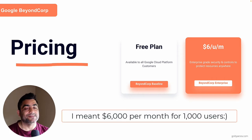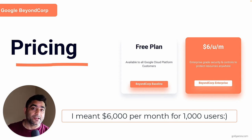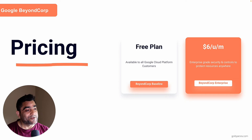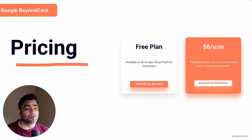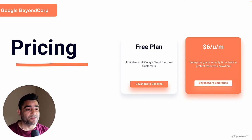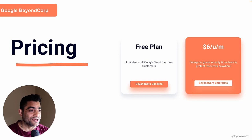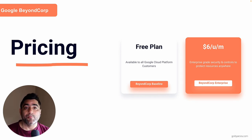Of course, this is the pricing I got from Google's public pricing page. To wrap up this video, these are the two plans available. If you want to try it out, just sign up for Google Cloud Identity and then for Google Cloud Platform — I'll link my video here showing how to do that — and then just try out a few things.